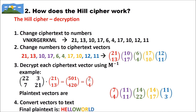We do this for each ciphertext vector to get our plaintext vectors. In the final step, we convert the vectors back to text: 7 gives H, 4 gives E, and so on. In the end, we get back 'Hello World'.